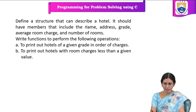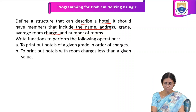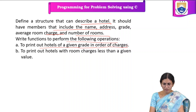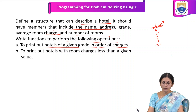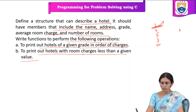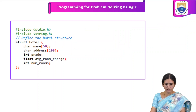The next program is to define a structure that can describe a hotel. It should have members including: name, address, grade, average room charge, and number of rooms. We have to write functions to: print out hotels of a given grade in the order of charges, and print out hotels with room charge less than a given value. For example, hotels are given grades 3, 4, and 5; for grade 3 with two hotels, they are printed in order of charges. If the user specifies a room charge of 100, hotels with charge less than 100 are displayed.